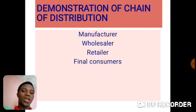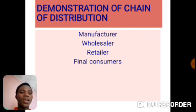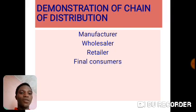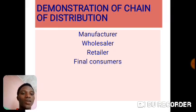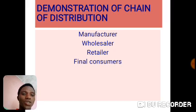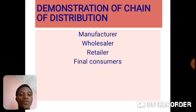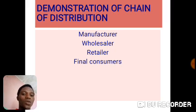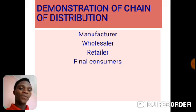Now let's demonstrate these channels. We have the manufacturer producing the goods. We have the wholesaler following the manufacturer, who buys in large quantity from different manufacturers and stores them in the warehouse for the retailers. We have the retailer at the third position, buying from the wholesalers varieties of products. And then we have the final consumers who buy in bits from the retailers.